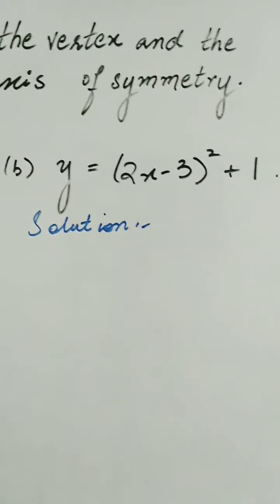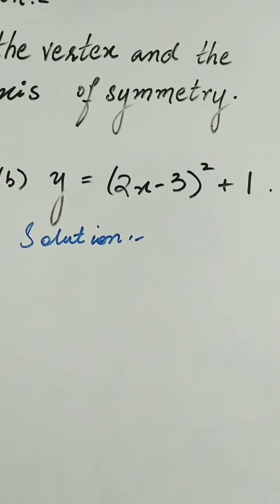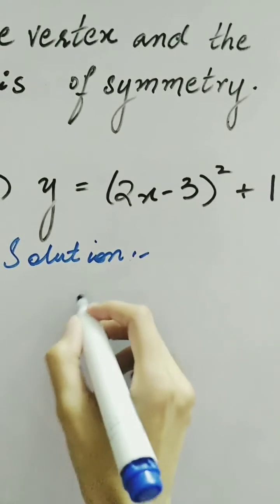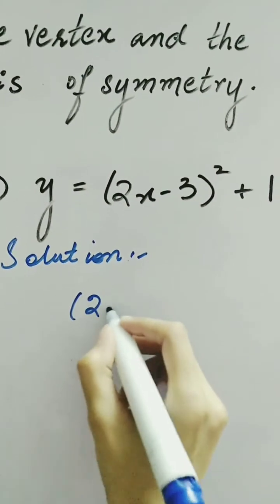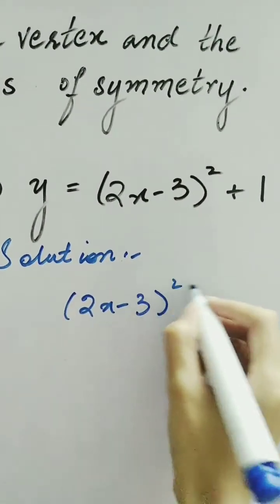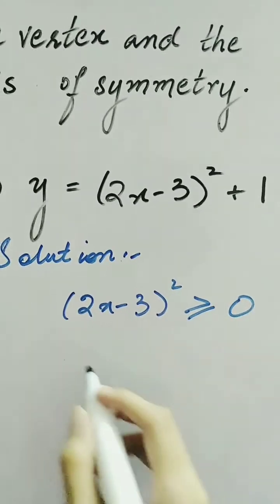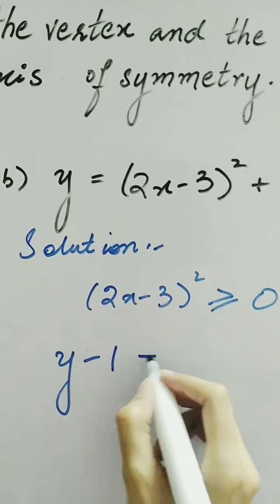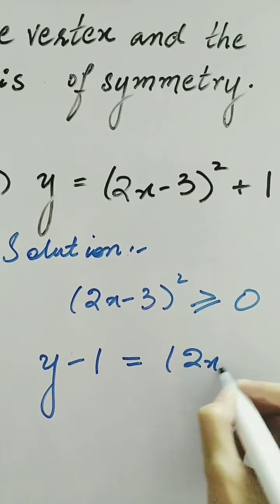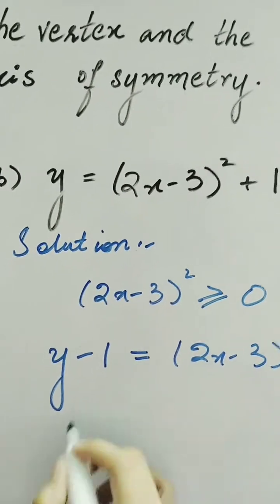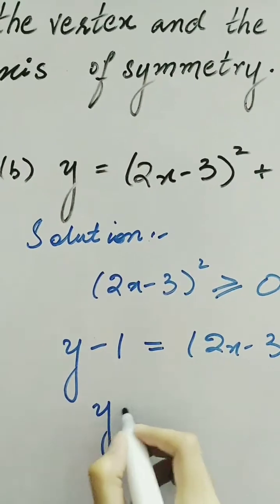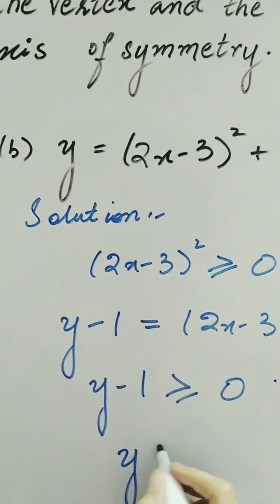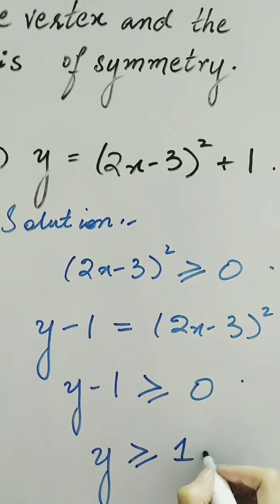Now look at another question: y = (2x - 3)² + 1. As we know, (2x - 3)² ≥ 0. So if we write this expression in the form y - 1 = (2x - 3)², we can say that y - 1 ≥ 0, or y ≥ 1.